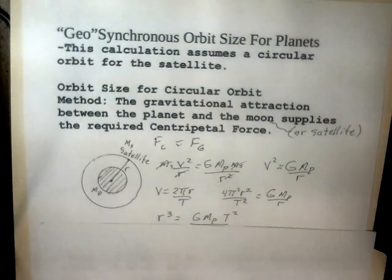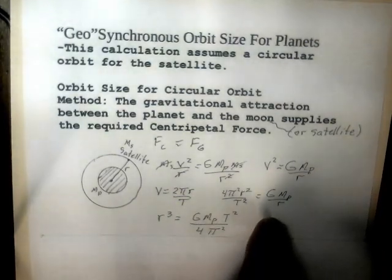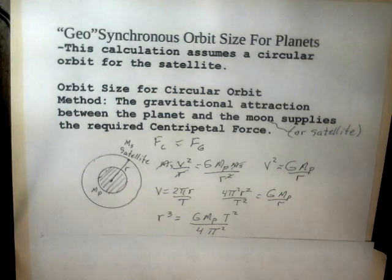Making that substitution, v squared becomes 4 pi squared r squared over T squared equals G mass of the planet over r. Gathering together the like factors and preparing to solve for r, we come up with our basic calculation equation: the cube of the radius of the orbit equals capital G mass of the planet times period squared, divided by 4 pi squared. This period needs to be in seconds.